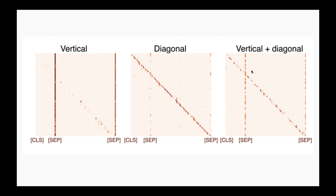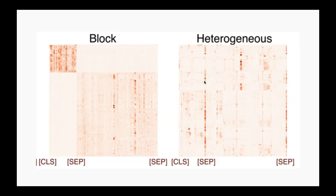The third pattern is 'vertical and diagonal' combined — it just couples the first two patterns together. These three patterns are not really surprising given the nature of BERT's special tokens and the language modeling pre-training task.